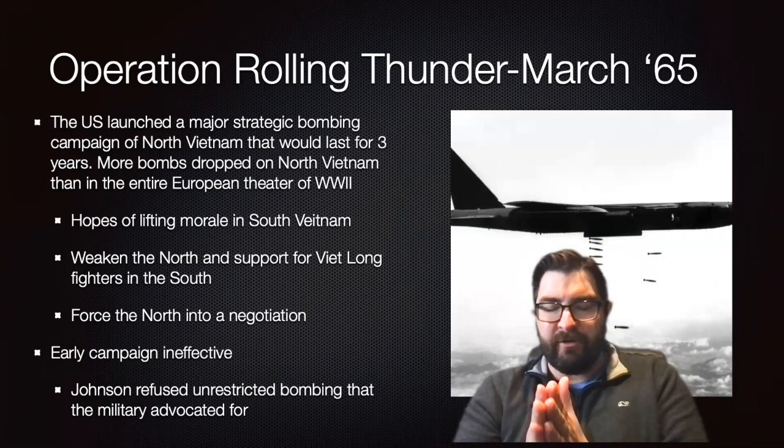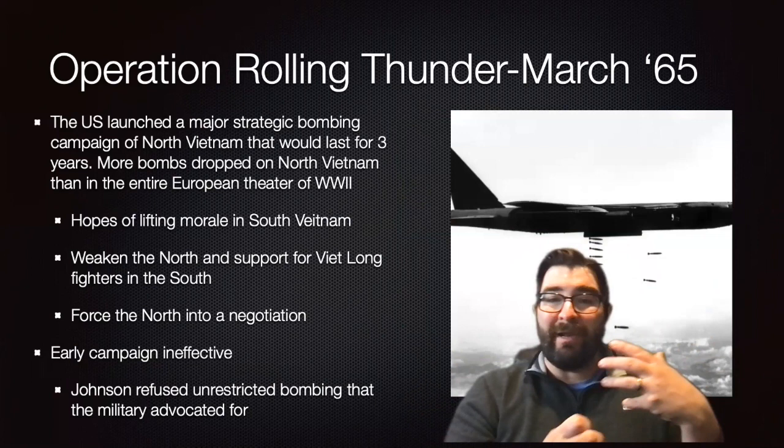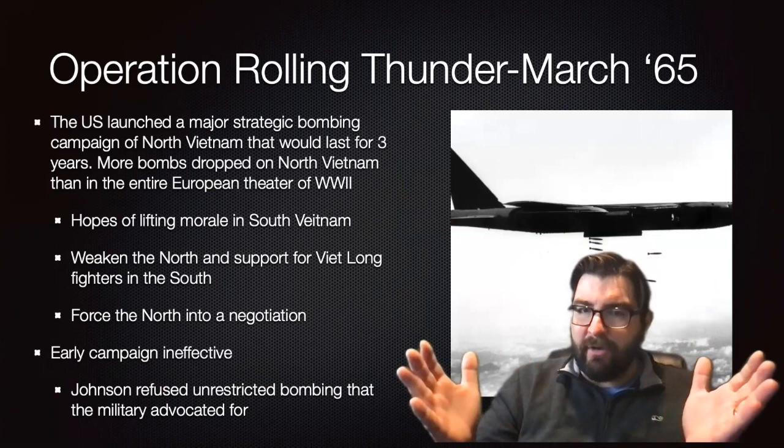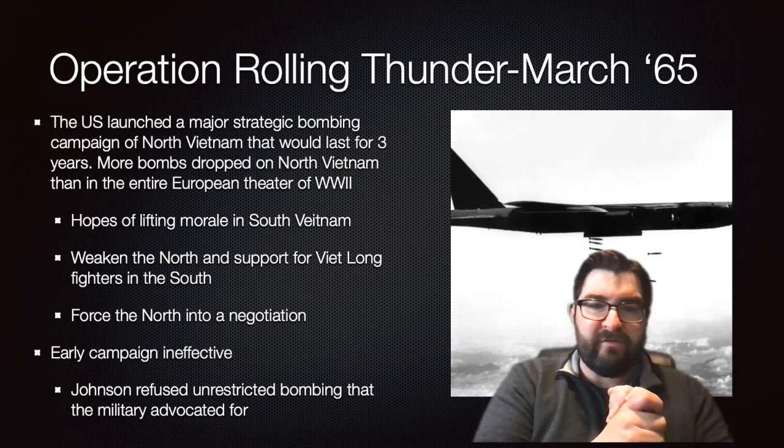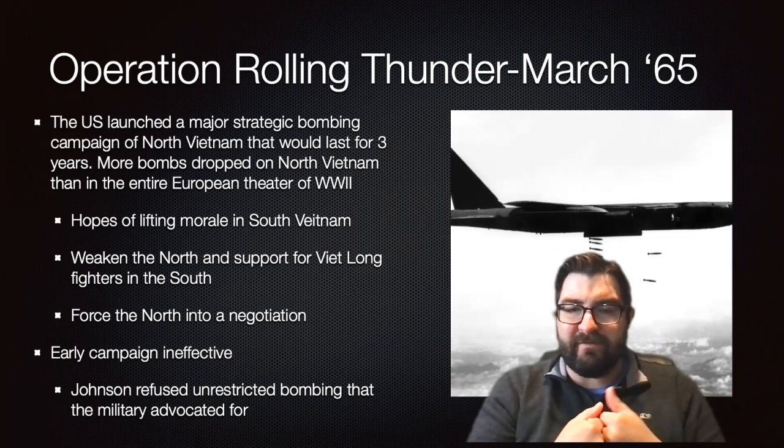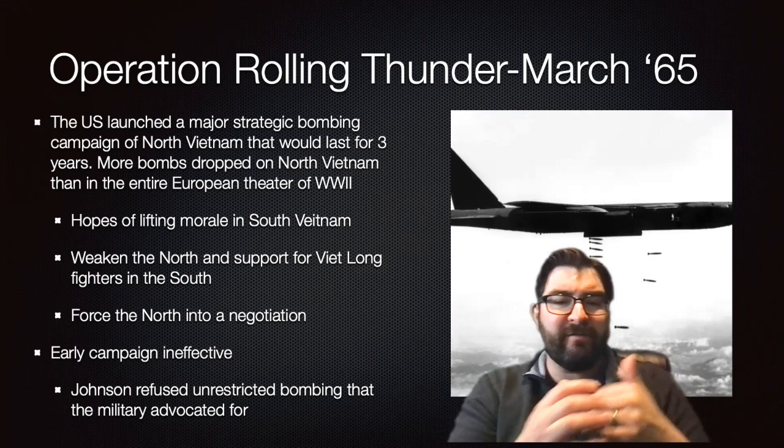He begins that in March of 1965 with what is known as Operation Rolling Thunder — a major strategic bombing campaign of North Vietnam that would last for three years. In fact, more bombs will be dropped on North Vietnam during Operation Rolling Thunder than in the entire European theater of World War II. The plan was to lift the morale of the government of South Vietnam, to weaken the North and support the Viet Cong fighters in the South, and to force the North into a negotiation.